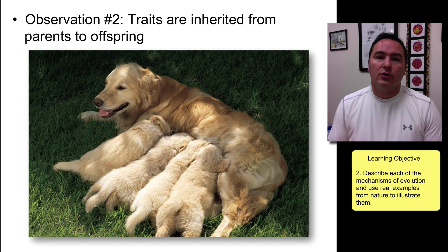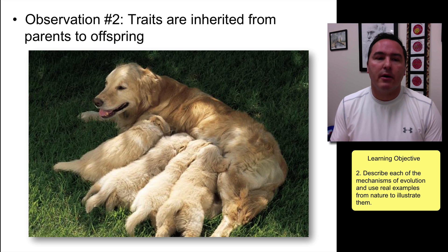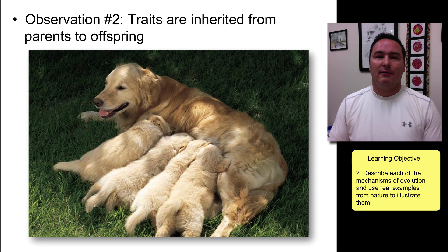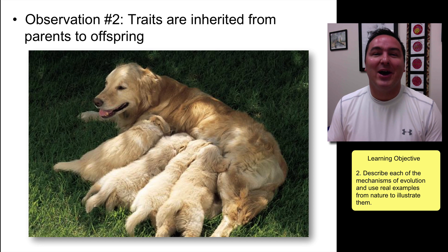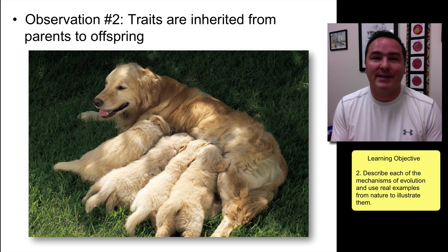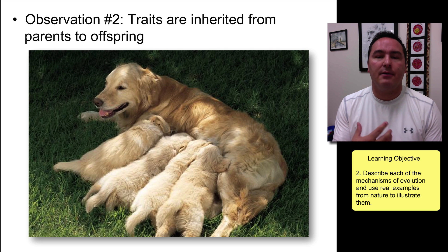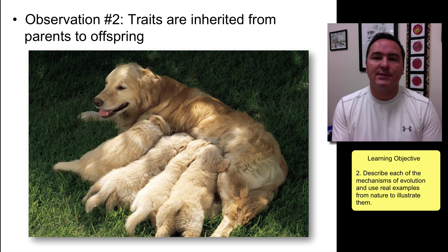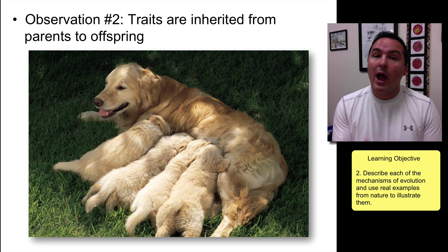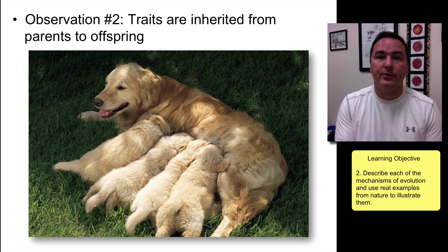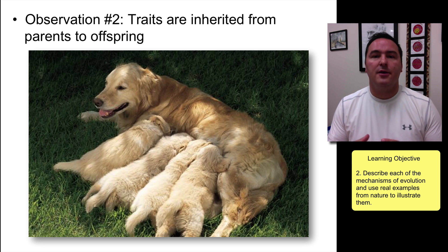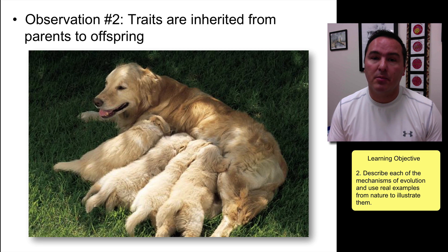Number two: traits that vary among these organisms are inherited from the parents to the offspring. Not every single characteristic is inherited — like if we eat too much and get a gut, that's not part of our genetics and doesn't get passed on. But for the most part, when looking at natural populations, the characteristics we see are passed on from parents to offspring. Darwin proposed that the majority of characteristics are inherited.